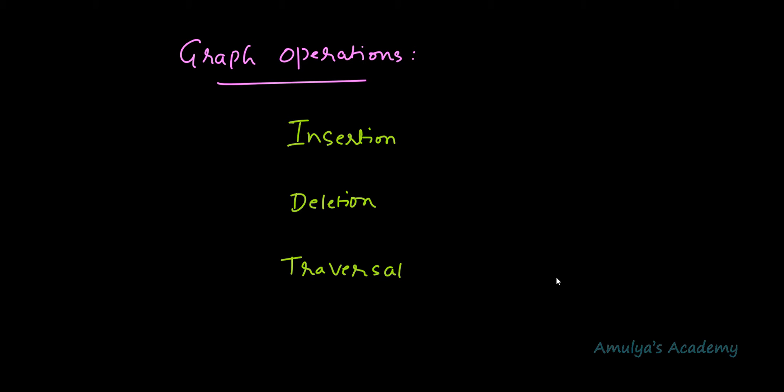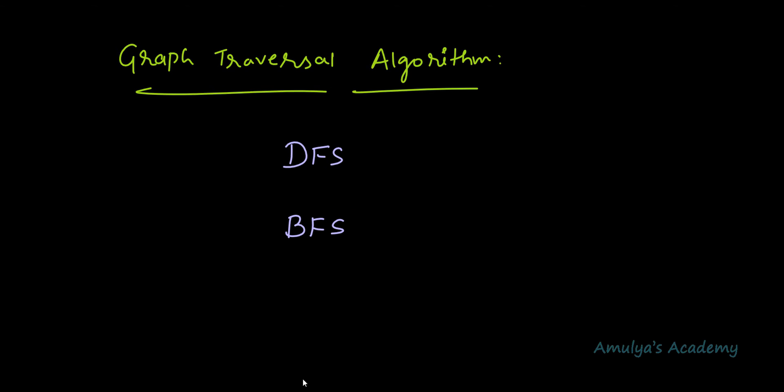Graph traversing means visiting every node or vertex of the graph. The process of visiting every node of a graph in an order is called a graph traversal operation. Here we will discuss two traversal algorithms: DFS and BFS. Both are traversal algorithms, but the order in which nodes are visited is different. So let's learn DFS and BFS in detail.